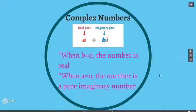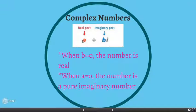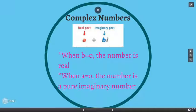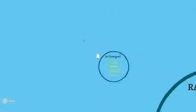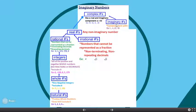A complex number has a real part — something without an i — and an imaginary part — something with an i. When b = 0, zero times anything is zero, so you're left with only a real number. When a = 0, you have only something with an i, which is called a pure imaginary number. So complex numbers include real and imaginary components, but if either part is zero, you get either only a real number or only a pure imaginary number.